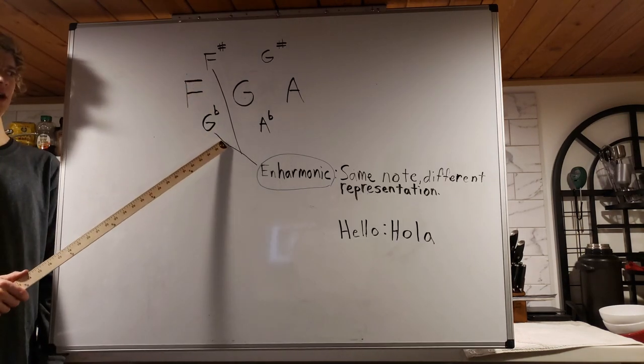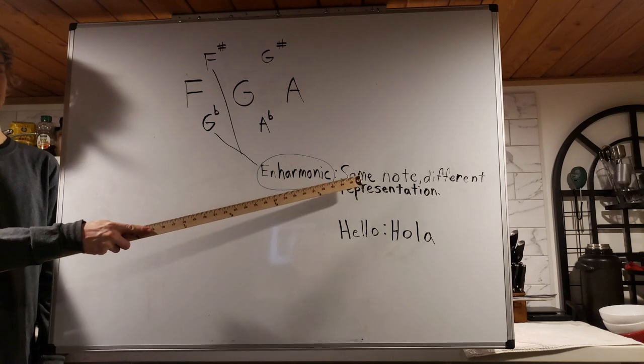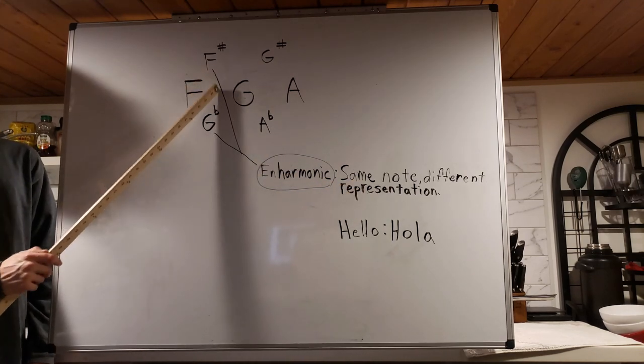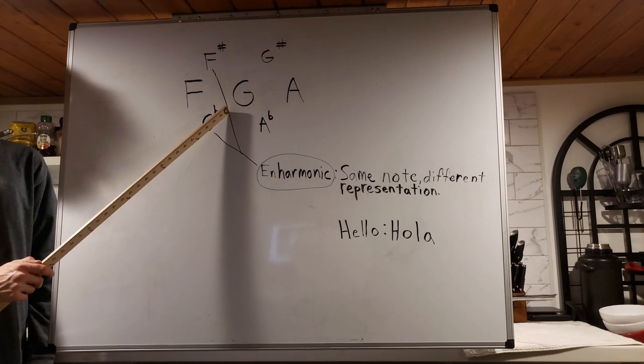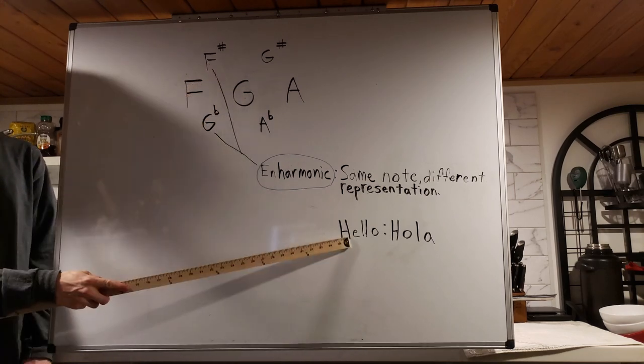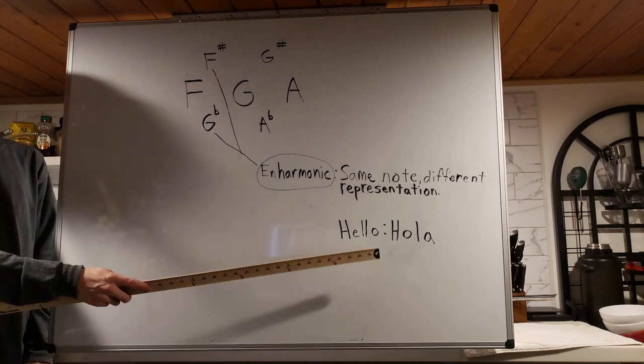So F sharp and G flat are enharmonics, which means they are the same note, but represented differently. So these are both the middle notes of F and G. They're just represented differently. Just like how hello and hola mean the same thing, but are represented differently.